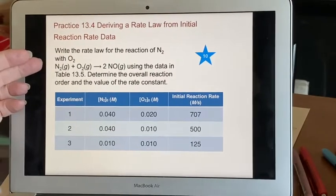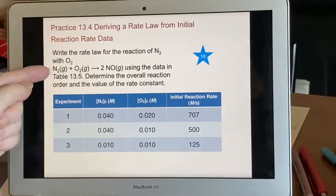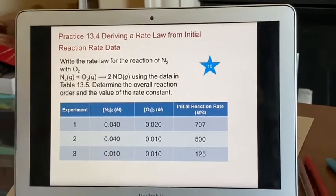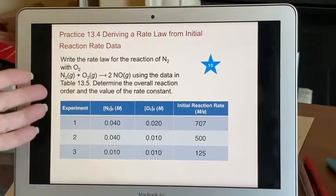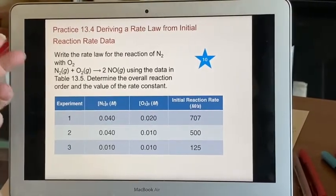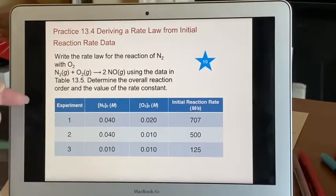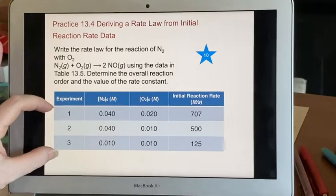Here we have a different reaction. In this reaction, we've got nitrogen and oxygen combining to form nitrogen monoxide. And we have data again. What's the overall reaction order? What's the value of the rate constant? So that's the same sort of thing that we did in the last one. We have three experiments again.